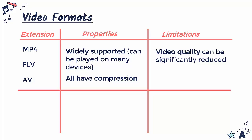Because we have compression, the actual quality from the original can be significantly reduced. Even if you had a really high quality film camera, applying heavy compression to it can reduce quality by quite a lot.